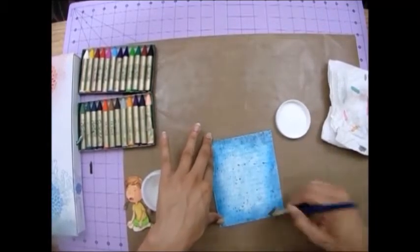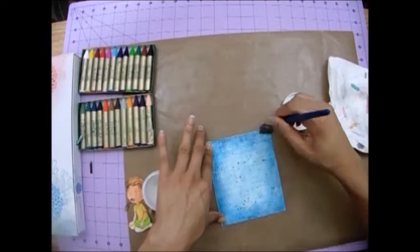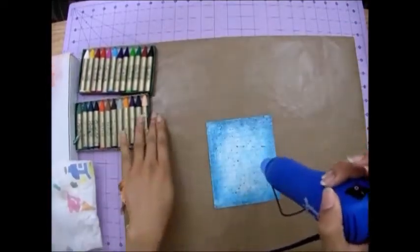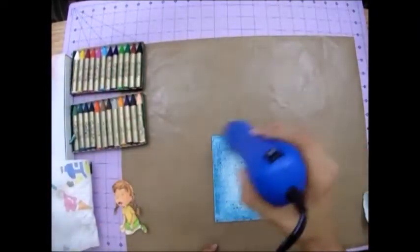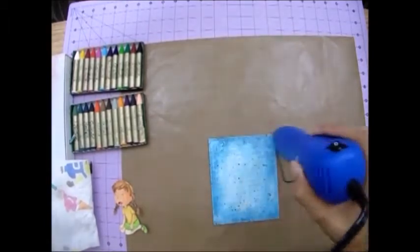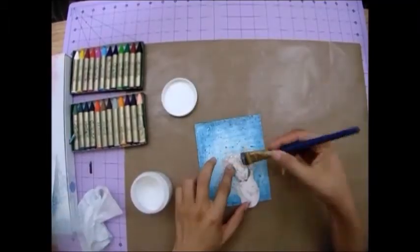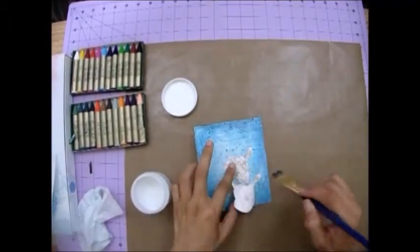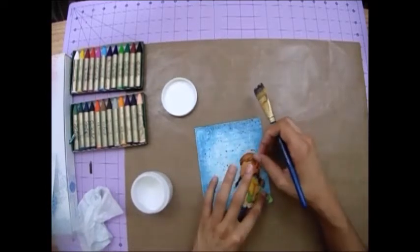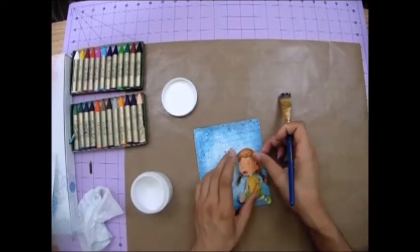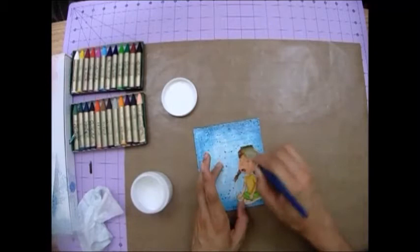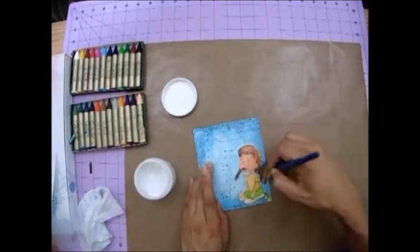Now what I'm going to do is place the little girl on the page. I'm using gel medium again, and guys, the materials that I'm using, everything is in the description box below the video. So I let it dry first, so I glue the little girl and then pass gel medium on top of it.